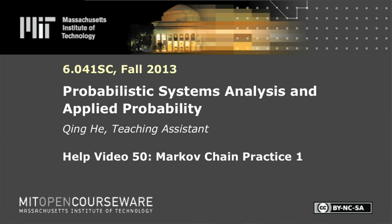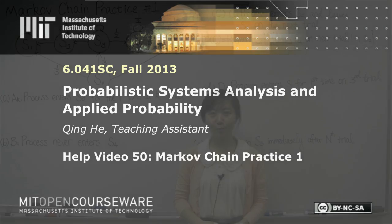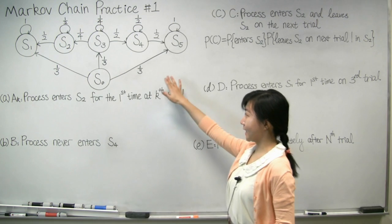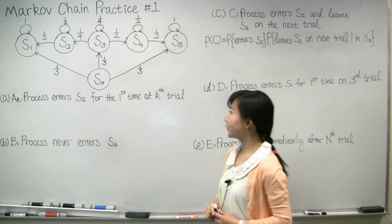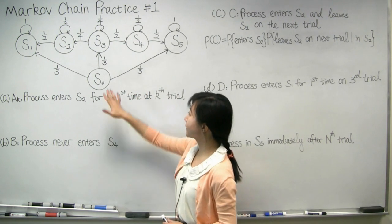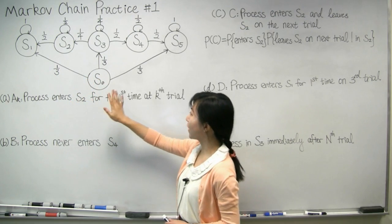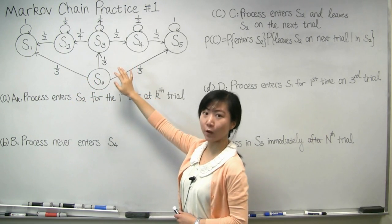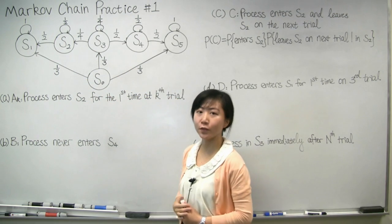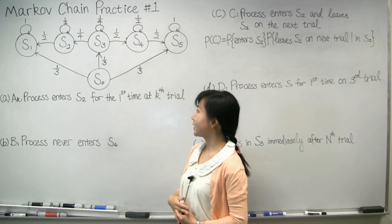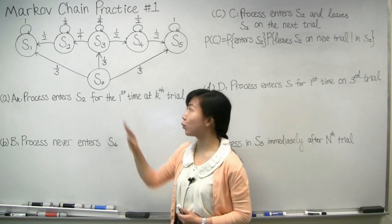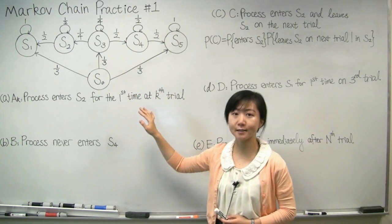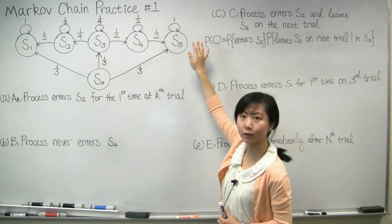Hi everyone. Today I'm going to talk about Markov chain practice number one. Before we start, let's first take a look at this Markov chain. This Markov chain has six states. In this problem, we always assume the process starts from state S0. On the first trial, the process can either make a transition from S0 to S1 with probability one-third, or from S0 to S3 with probability one-third, or from S0 to S5 with probability one-third. If on the first trial the process makes a transition from S0 to S1 or from S0 to S5, it will always be stuck in either S1 or S5 forever, because both states S1 and S5 have a self-transition probability of one.